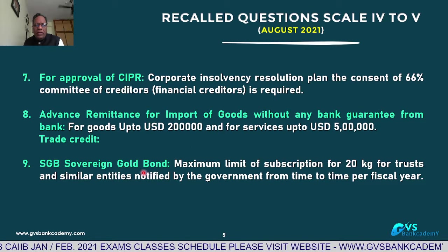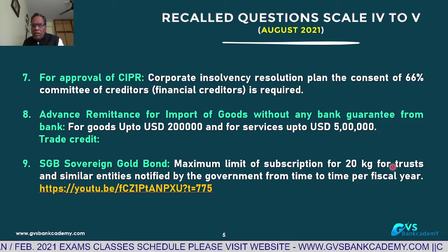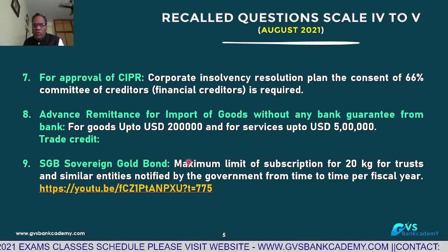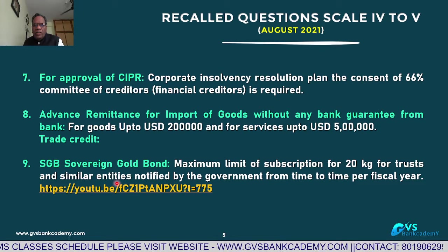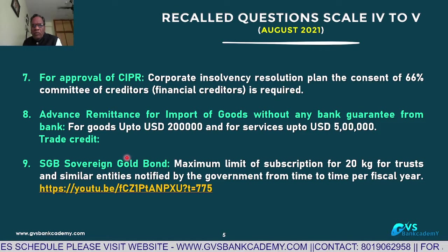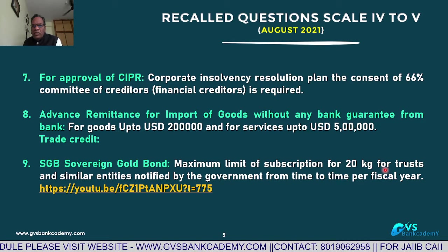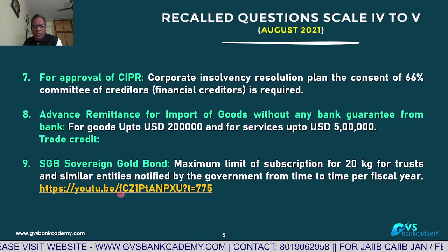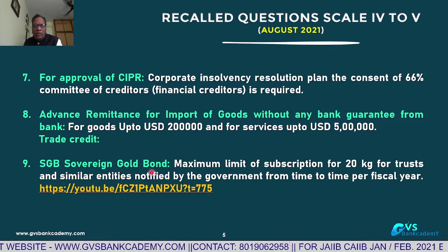Q9: Sovereign Gold Bond Scheme. The maximum limit for subscription is 20 kg for trusts and similar entities notified by the government. Minimum is 1 gram; maximum is 4 kg for individuals and 20 kg for trusts and registered societies.